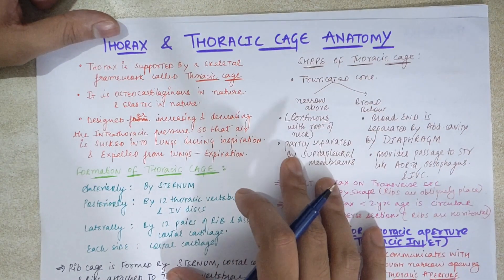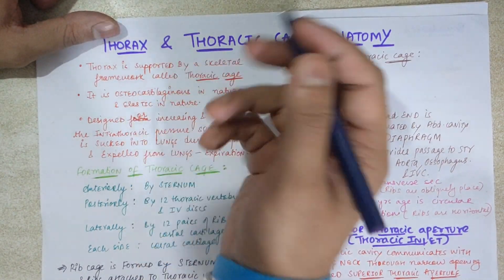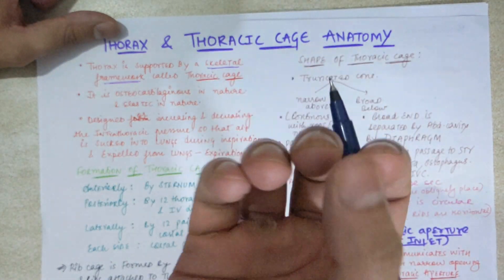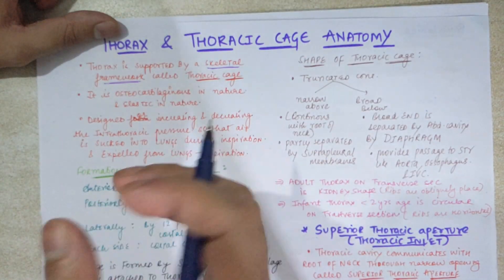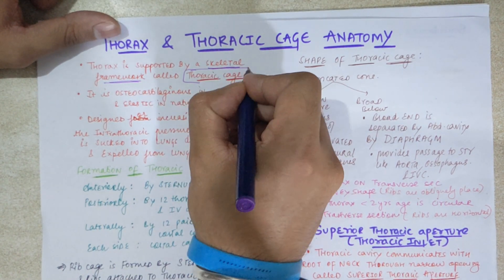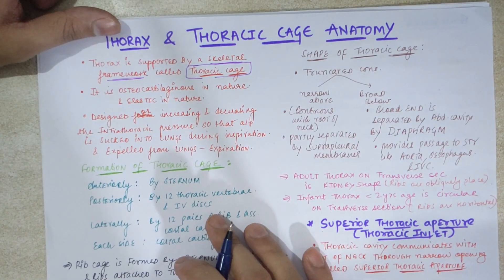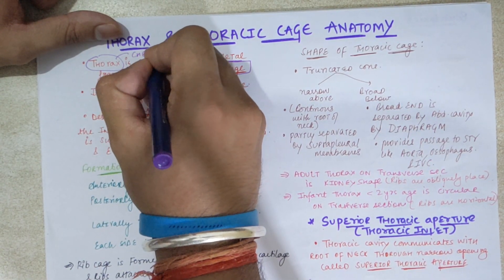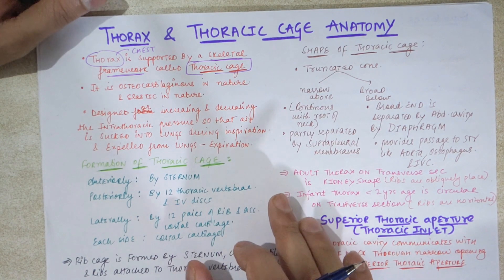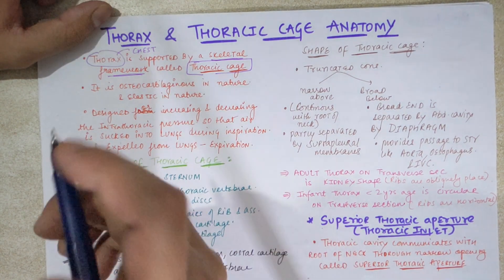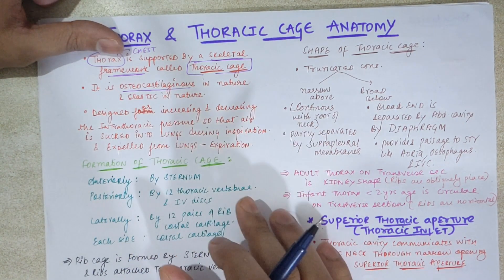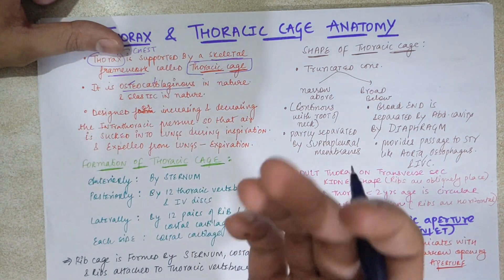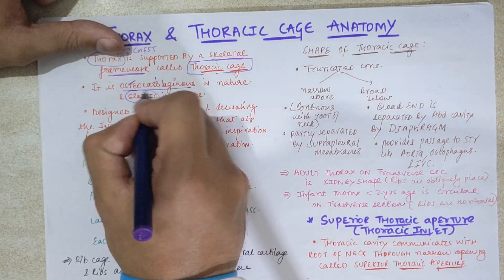So, thorax — what is it? It is the skeletal framework of the chest region. It contains bones and cartilage, including costal cartilage, and is osteocartilaginous in nature. It is also elastic in nature.